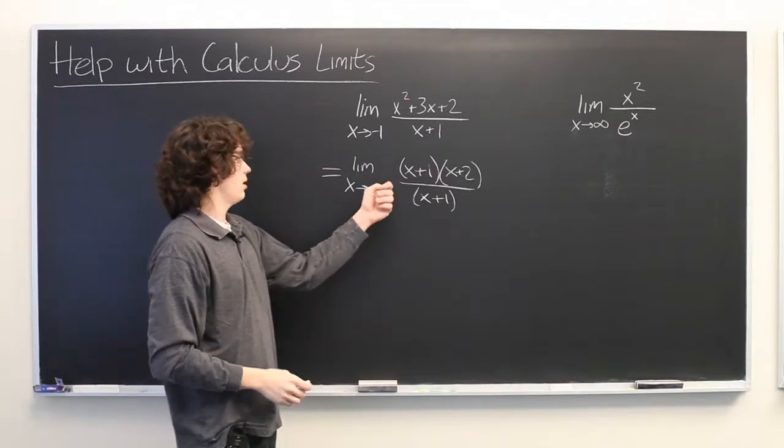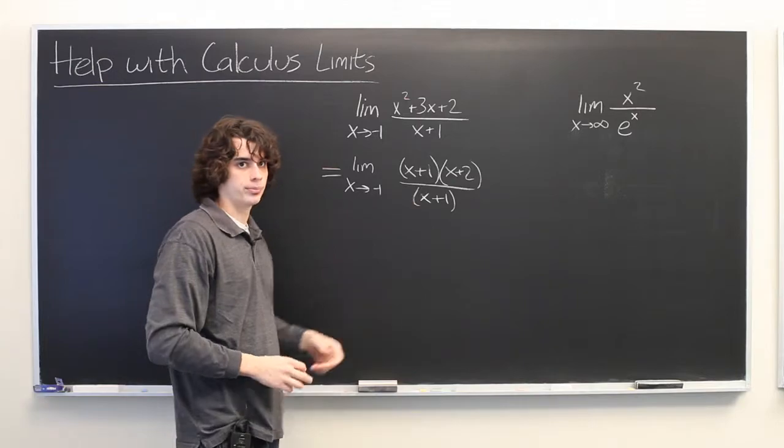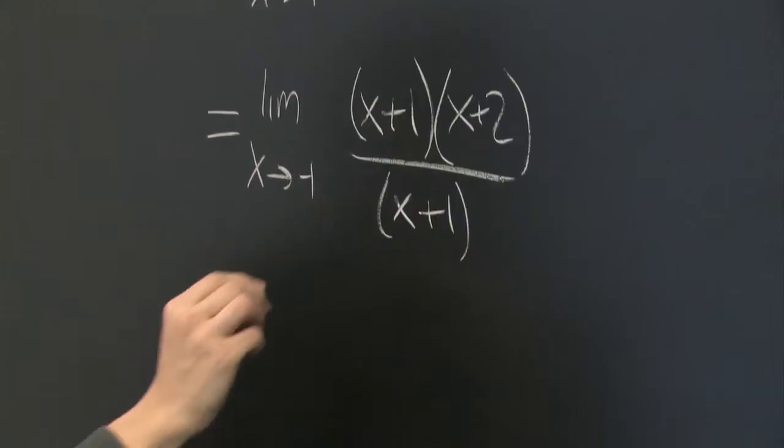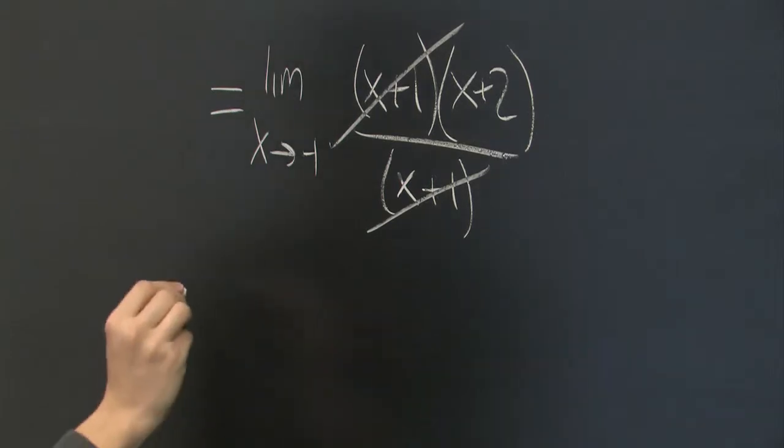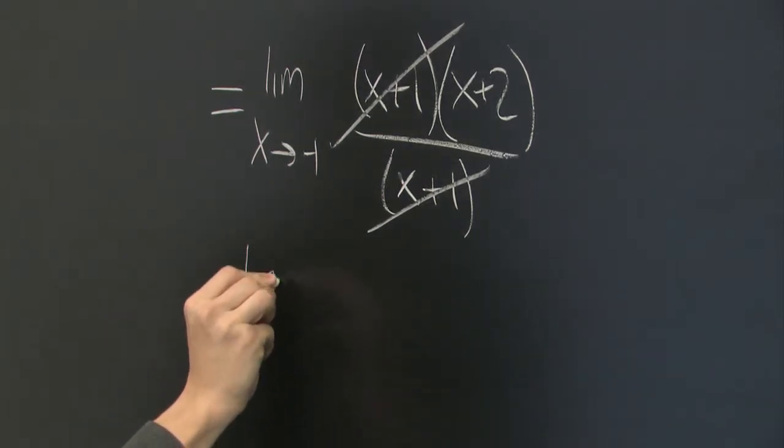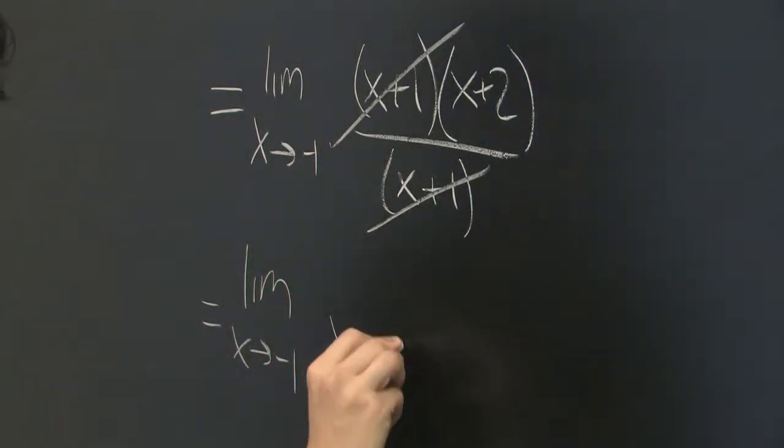Well, here we can see that there's x plus 1 in the numerator and an x plus 1 in the denominator. Since we're computing the limit, we can simply cancel those out. And what we're left with is the same limit, x going to negative 1 of x plus 2.